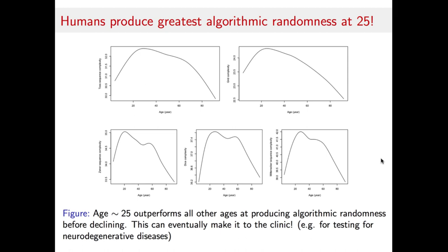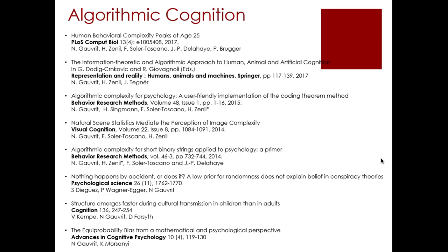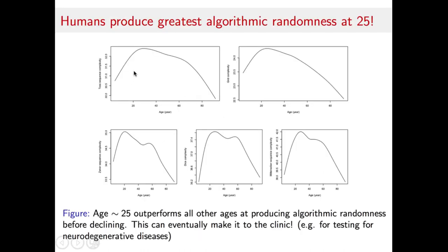Notice how interesting this experiment is, because it is in some way a reversed Turing test where people — even if they didn't know it — were competing against computer programs to see who could produce better algorithmic randomness. People without knowing were asked to behave like the longest computer programs producing the highest algorithmic complexity sequences. So if this were a game, people at age 25 would have better chances of beating a random computer program at producing greater algorithmic randomness.